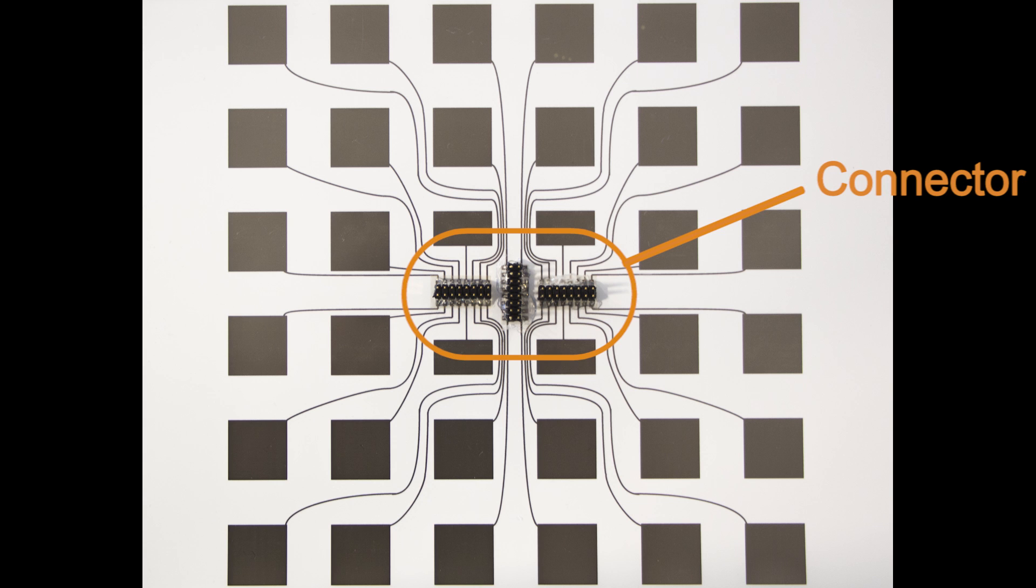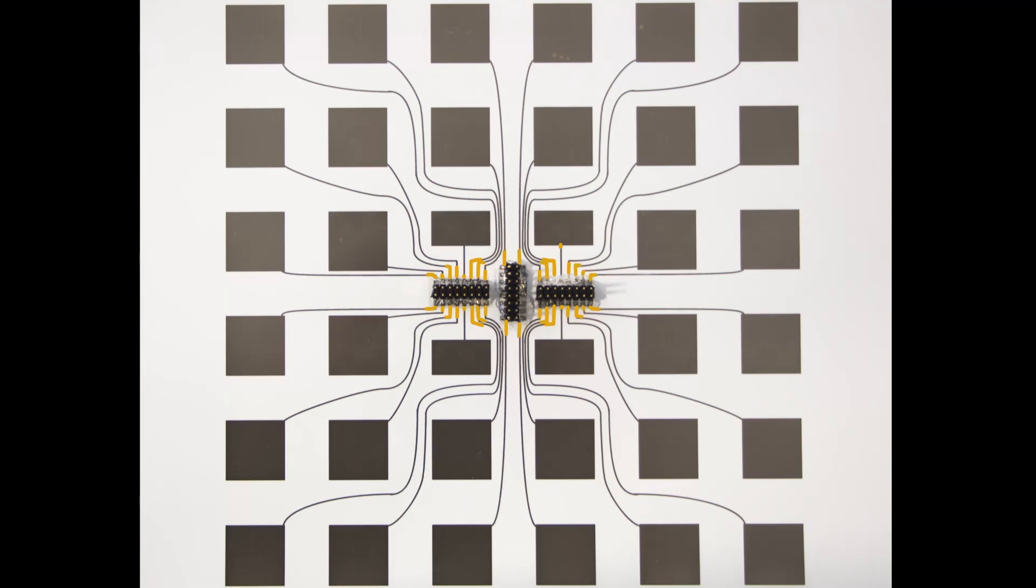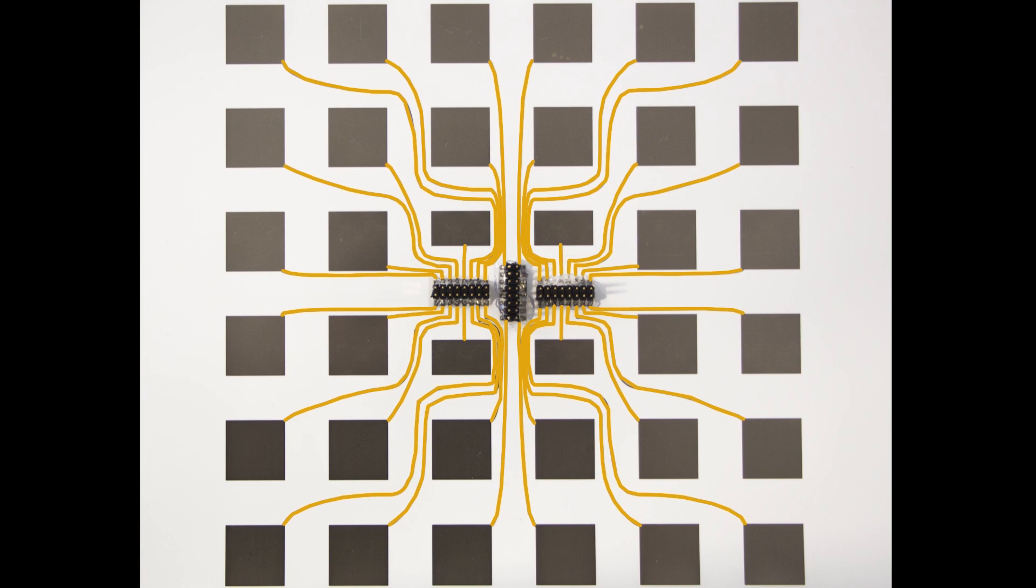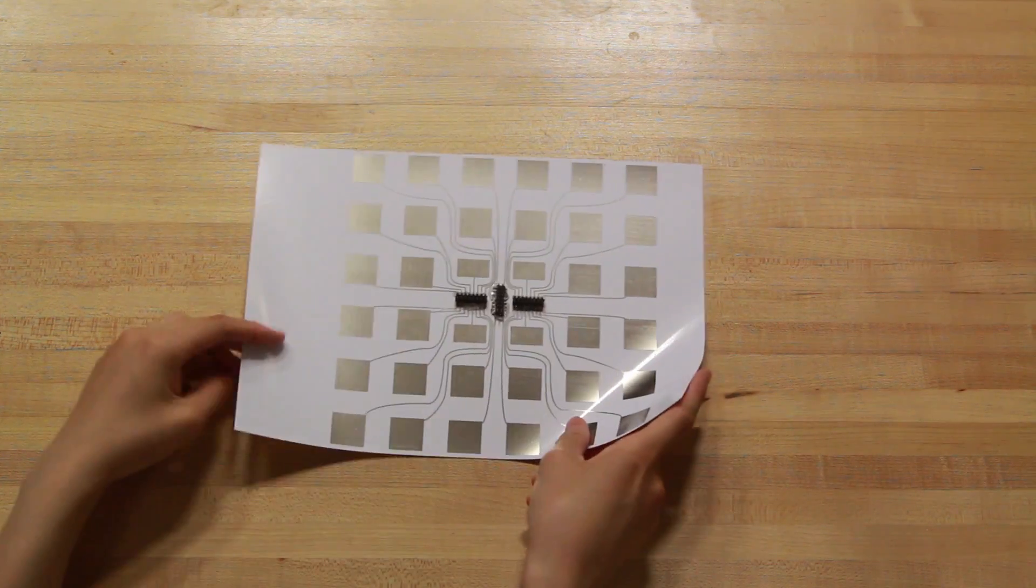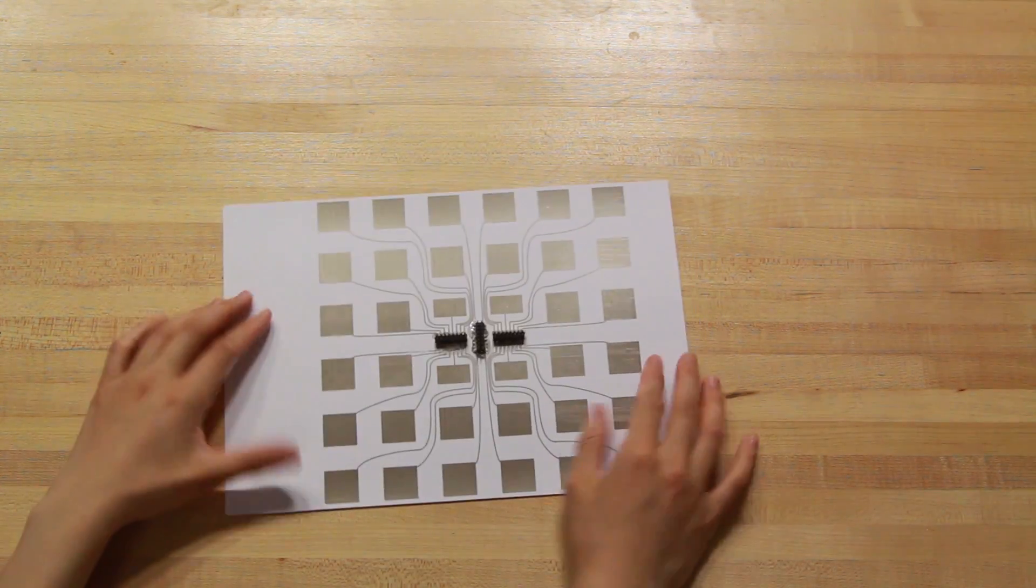The first layout follows the geometry of a star. The connector, which is used to tether the sensor sheet with a controller, is placed in the center. Wires extend radially to the electrodes. The sensor is printed on flexible substrate using conductive ink.